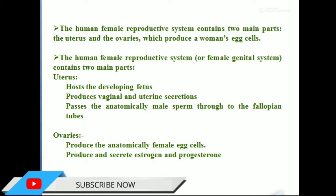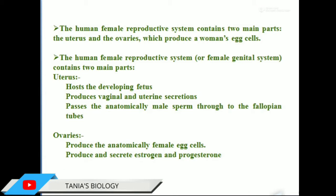In the female reproductive system there is a primary sex organ, like the male, and that is the ovary — a pair of ovaries present in the female reproductive system. There are also other sex organs and ducts which help in reproduction, like the uterus, fallopian tube, vagina, and glands such as Bartholin glands and mammary glands. Now we discuss about the ovary.